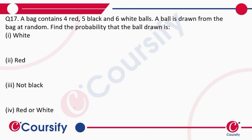A bag contains 4 red, 5 black, and 6 white balls. A ball is drawn from the bag at random. Find the probability that the ball drawn is white. First, we'll write down the total number of balls: 4 plus 5 is 9, and 9 plus 6 is 15. So the total is 15.